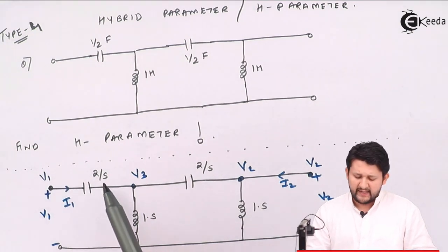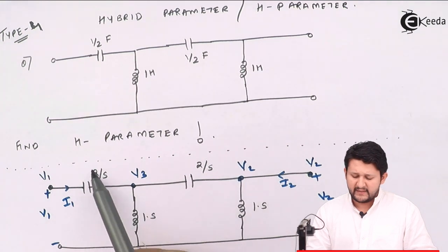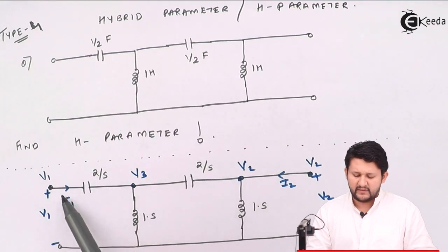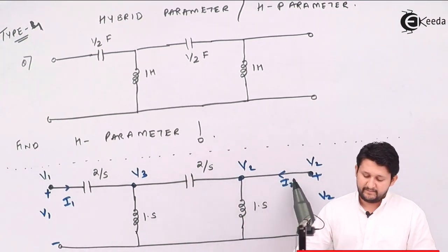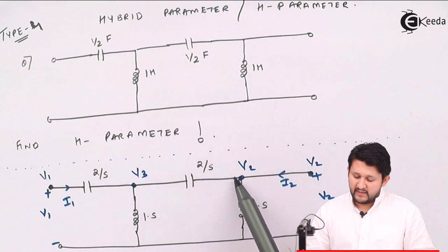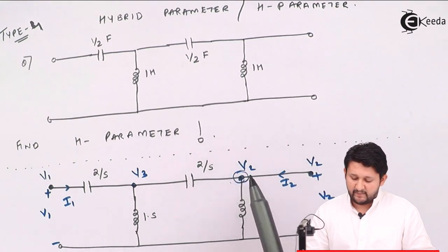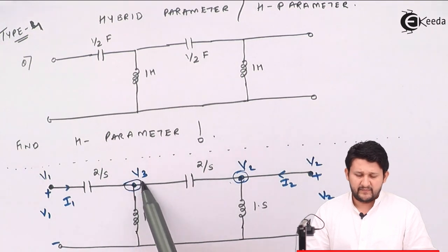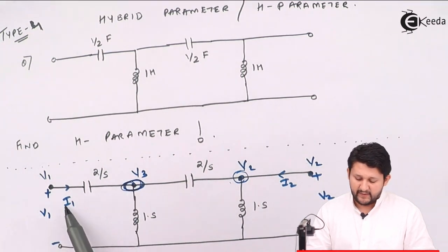So I1 equals (V1 minus V3) divided by the impedance in that branch. Similarly for I2, we have a junction, so I need to apply KCL at that point. For V3, I also need to apply KCL at that node.